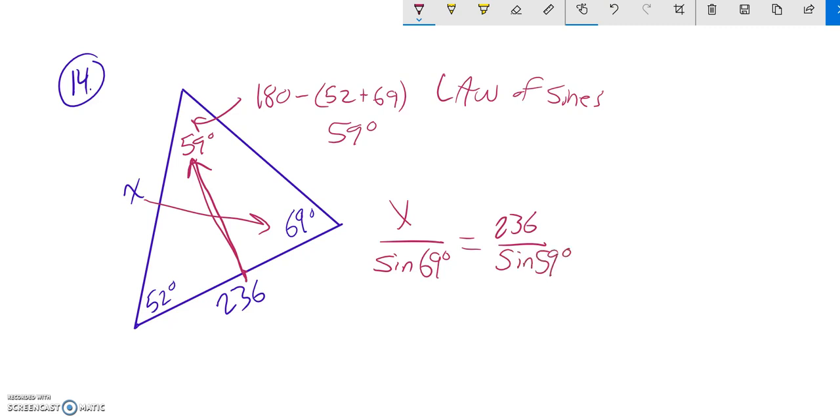We're going to get x alone. Sine of 69 degrees is just a number in the denominator. I'm going to multiply both sides by it, sine of 69 degrees.